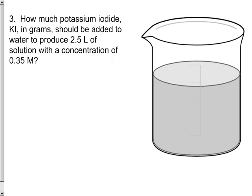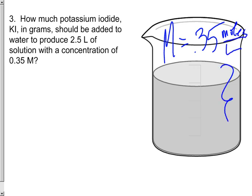To do a pretty complicated problem here about potassium iodide and looking at molarity. We want to know how many grams need to be added to 2.5 liters of solution to create a solution with a concentration of 0.35 molar. So we want our molarity to be 0.35 moles per liter and we have a volume here of 2.5 liters.